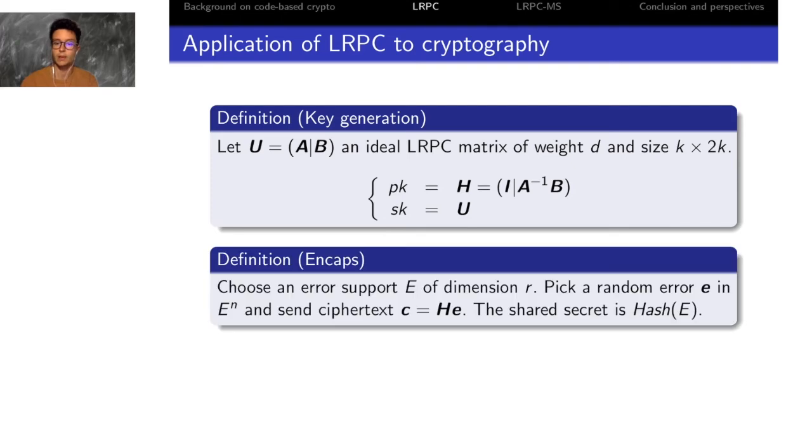To encapsulate a shared secret, you choose a support of error of a small dimension R and you pick a random error with that support, and you send the ciphertext to be the syndrome of this error with the parity check matrix H.